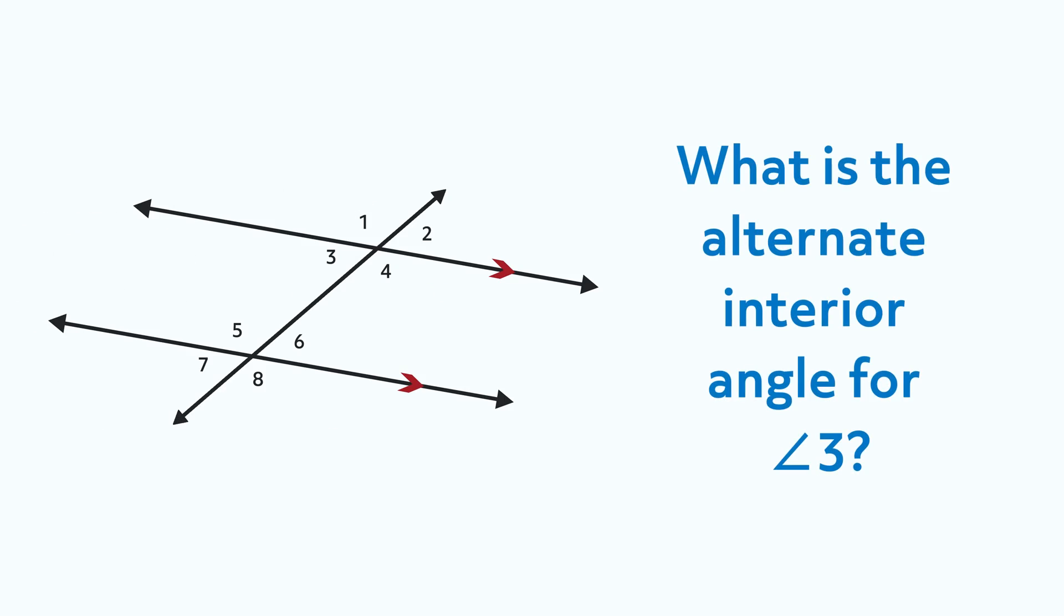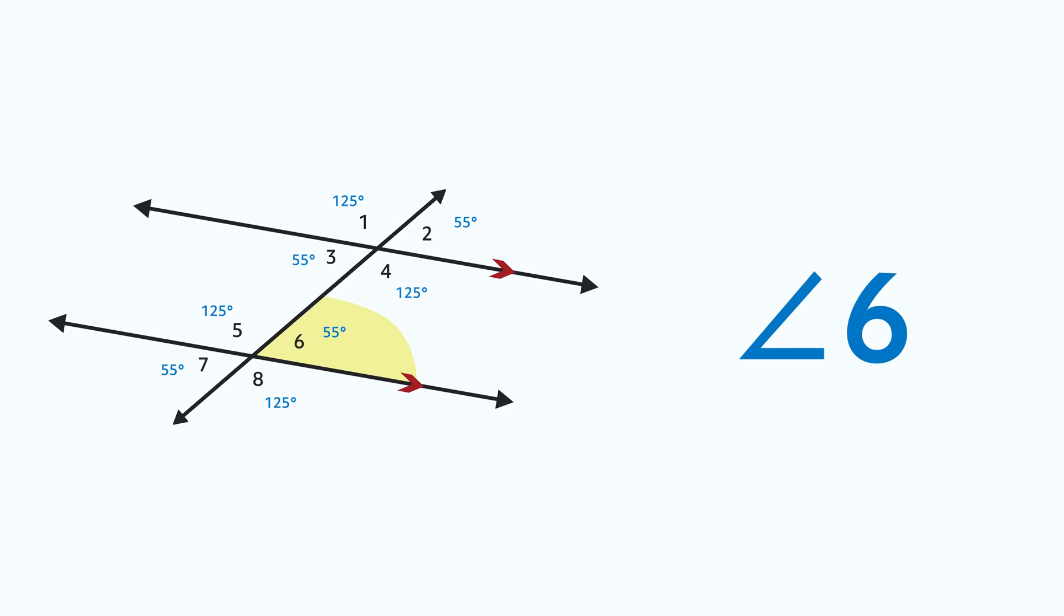The question will always relate to the other group of angles. Something like, what is the alternate interior angle for angle three? We would look to the other group of angles, then to the other side of the intersecting line, and then find the only angle that is an interior angle, which would be angle six. The same-side interior angle for angle three is angle five.